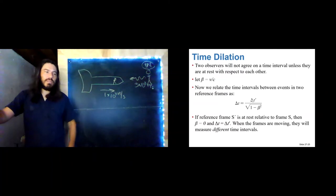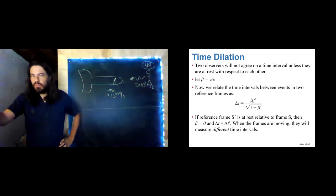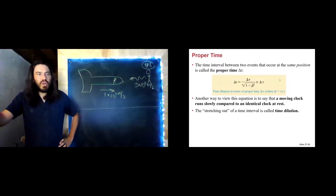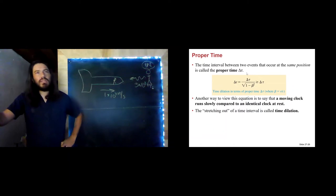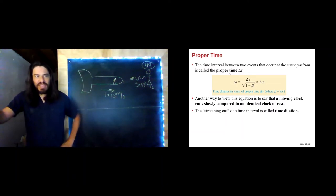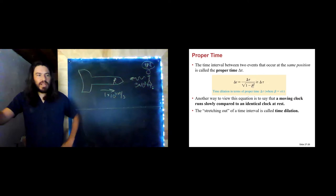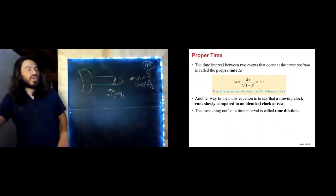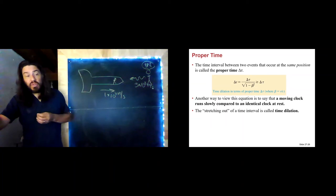This can be a little bit tricky — it can be hard to figure out who's at rest and who's moving. So we introduce a new idea called the proper time. The proper time is the time interval between two events that occur at the same position. We replace delta T′ with delta tau and end up with: delta T = delta tau / √(1 − β²). Notice that the proper time is the smallest time interval that anyone will measure.